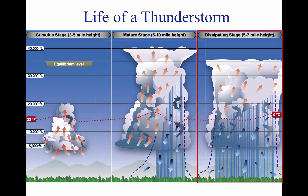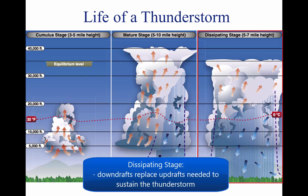At this point, the storm enters the dissipating stage. This is when the downdrafts spread out and replace the updrafts needed to sustain the storm.